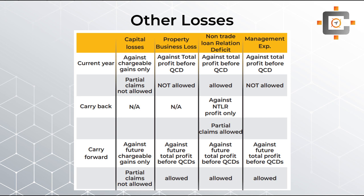Next is the property business loss. As we saw in the previous chapter, property business losses can be set off against total profit — there is no restriction that they must only be set off against property income. In corporation tax, property losses can be set off against all other kinds of profits. When choosing the current year option, partial claims are not allowed. If you carry property losses forward, they can still be set off against all kinds of total profit, and in the carry forward option partial claims are allowed.